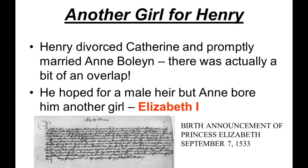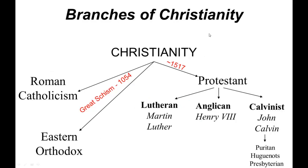Here's where we are with the branches of Christianity. Christianity had a great schism between Eastern Orthodox and Roman Catholic. In 1517, Protestants started breaking off — Martin Luther with the Lutherans, Henry VIII with the Anglicans, and John Calvin with the Calvinists, who would later become the Puritans that went to Massachusetts. The Huguenots are in France. The Presbyterians wound up in Scotland. But they're all Calvinists.